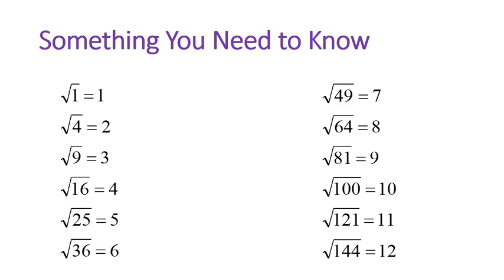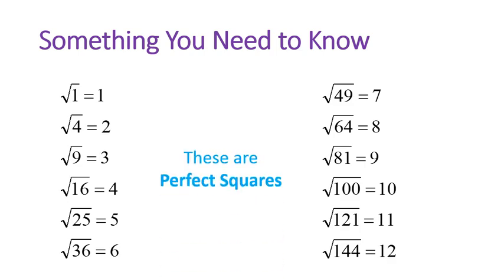Something you will need to know before you get started are these numbers. The square root of 1 is equal to 1 — it's actually plus or minus 1, but for the purposes of this lesson, we're going to be talking about just the positive square roots. So the square root of 4 we'll consider that 2, and the square root of 9 is 3, and so on.